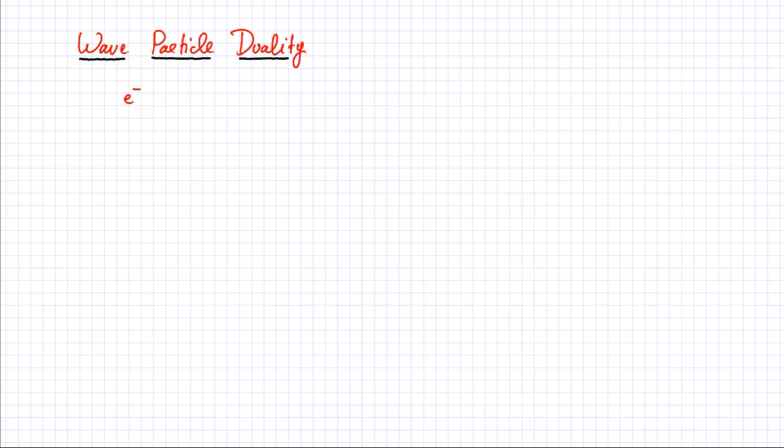In this lecture we're going to talk about wave-particle duality. Wave-particle duality is used to describe the behavior of an electron. We are all familiar with an electron — it's a particle that orbits around the nucleus in an atom, attracted by it. It has a charge of minus one, which is its relative charge.